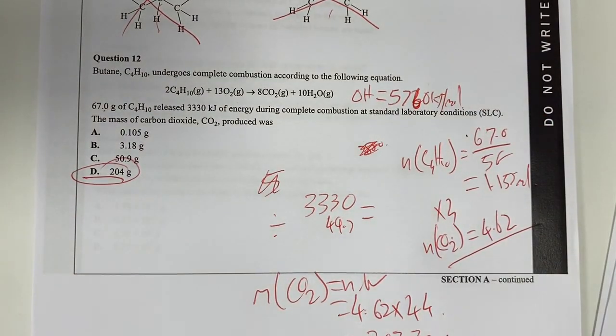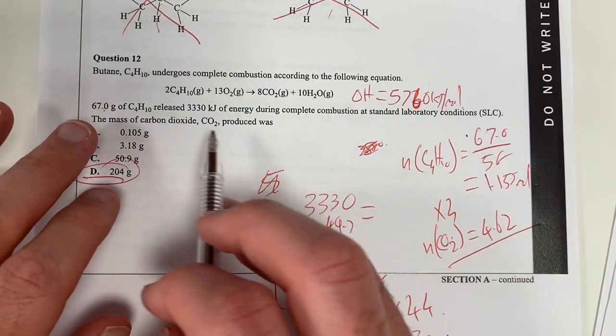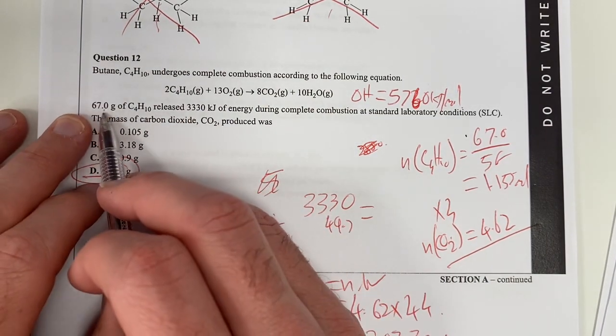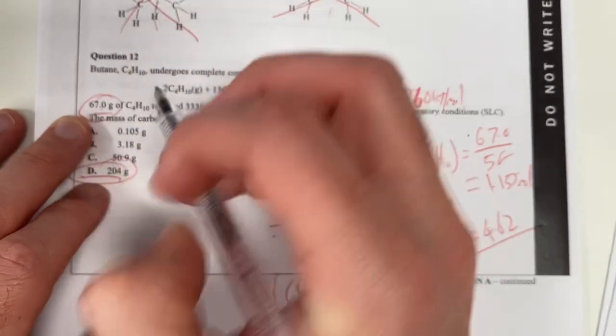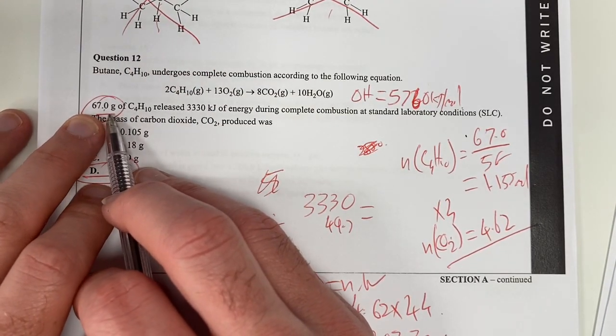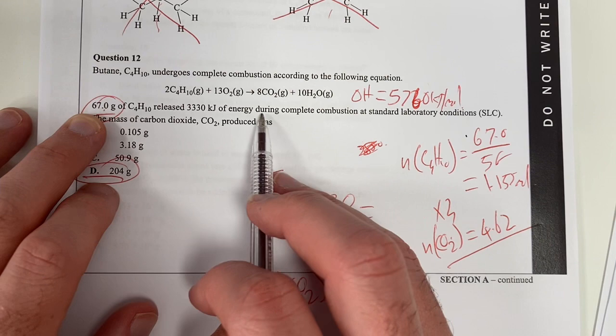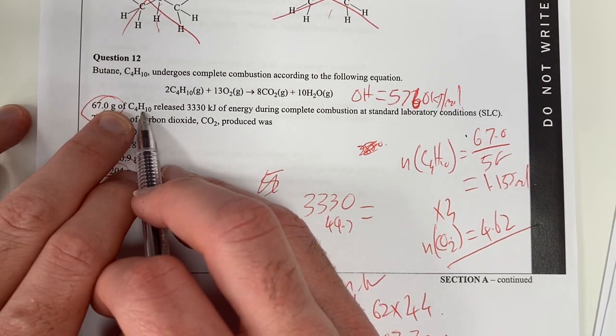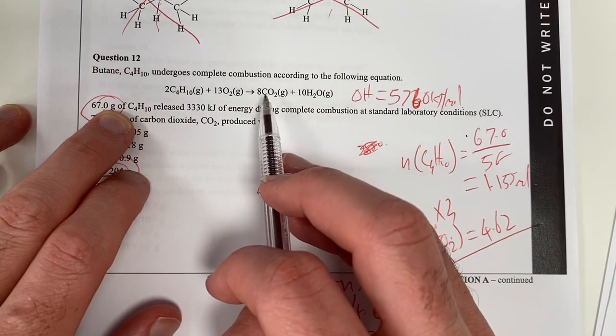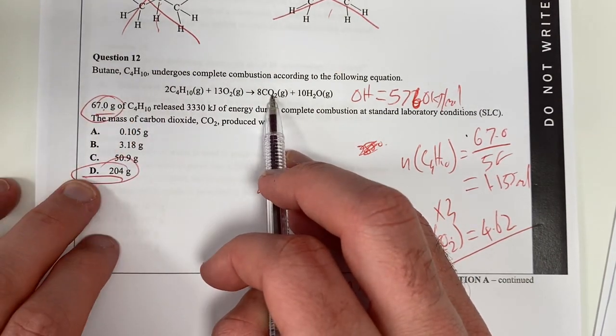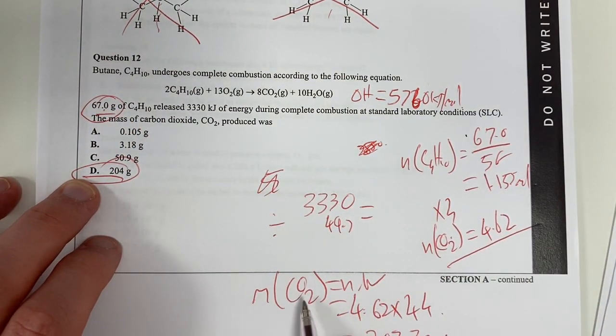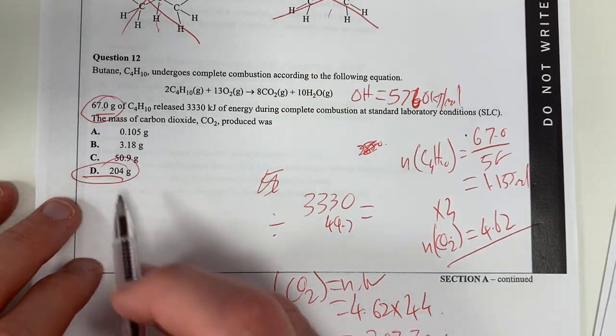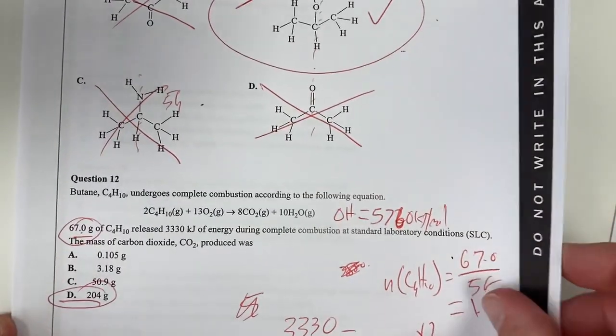So, what I did there is I made sure that that was the amount of methane that was actually burnt. It kind of says it is, but I just wanted to double check that. But then I just found out the number of moles of methane. I ratioed that to my carbon dioxide and then I multiplied the moles of carbon dioxide by its molar mass. Gives me D there for that answer.